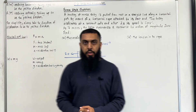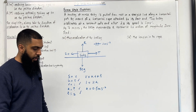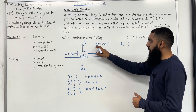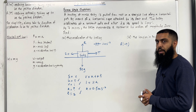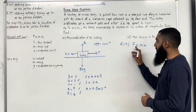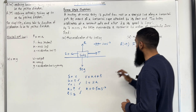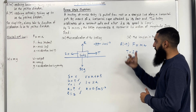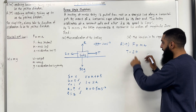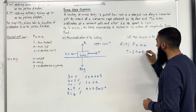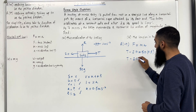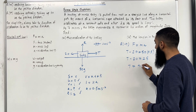Moving on to Part B: find the tension in the rope. The tension acts in the horizontal direction, so I resolve horizontally in the direction of acceleration, taking right to be positive. Using Newton's Second Law F = MA, the resultant force F = T minus 20, because 20 N acts to the left. So T minus 20 = 50 multiplied by 0.5, giving T minus 20 = 25. Hence T = 45 Newtons.